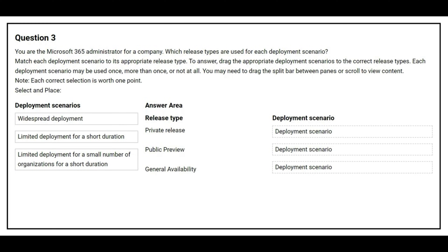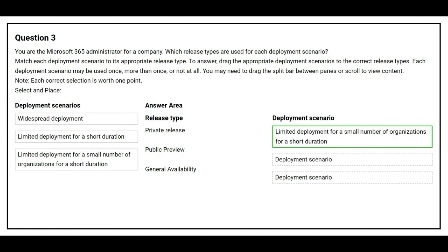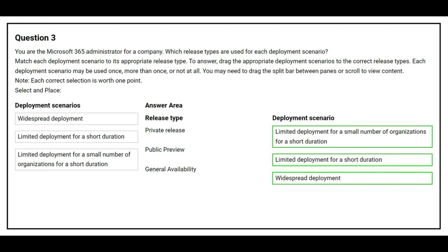Question number three: you are the Microsoft 365 administrator for a company. Which release types are used for each deployment scenario? Match each deployment scenario to its appropriate release type. The first release type is private release — the correct deployment scenario is limited deployment for a small number of organizations for a short duration. The second release type is public preview — the correct deployment scenario is limited deployment for a short duration. The third release type is general availability — the correct deployment scenario is widespread deployment.